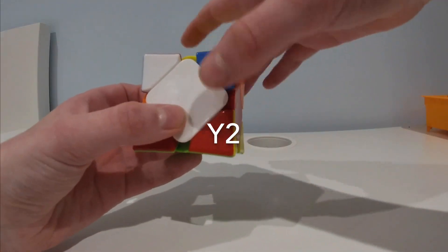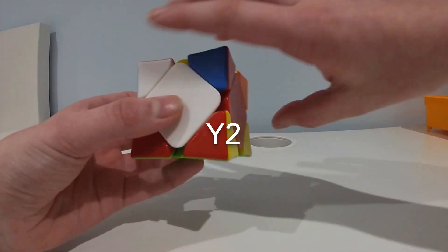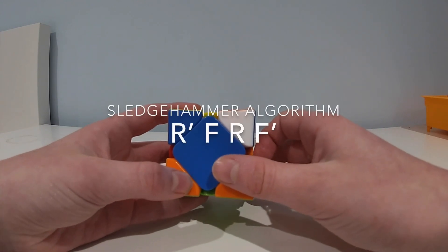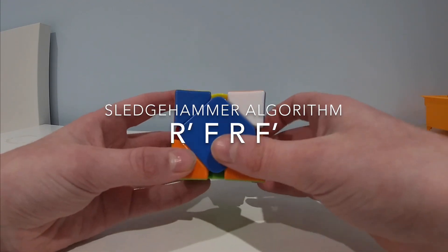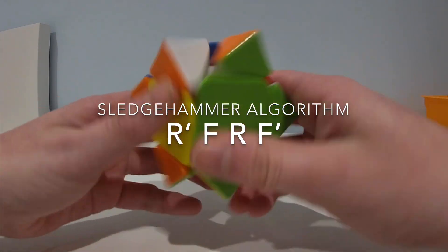And then you rotate the cube. This is called a Y2 rotation. But you rotate it like 180 degrees. And you do the algorithm again. R prime, F, R, F prime.